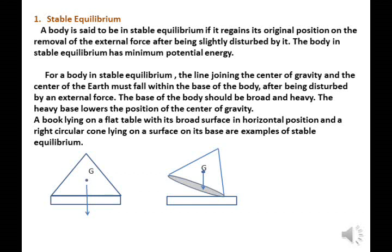The base of the body should be broad and heavy. The heavy base lowers the position of the center of gravity. A book lying on a flat table with its broad surface in a horizontal position and a right circular cone lying on its base are examples of stable equilibrium.